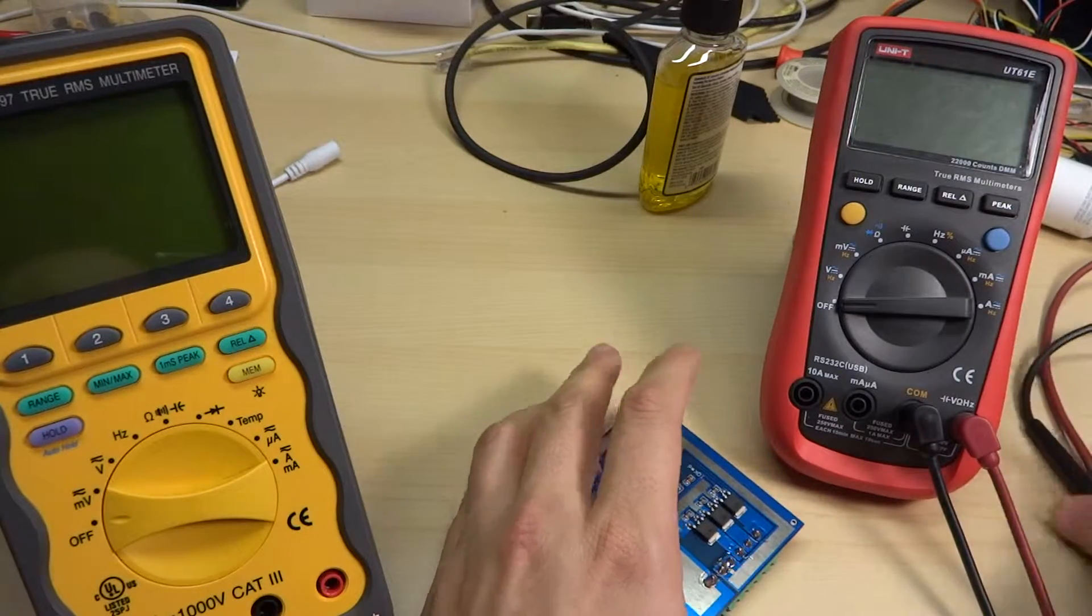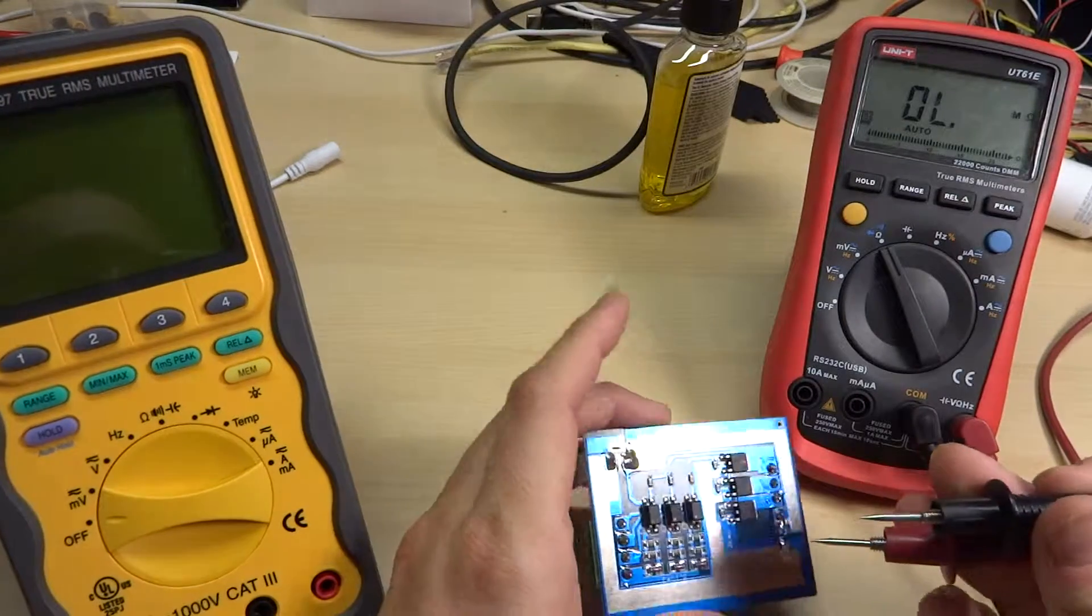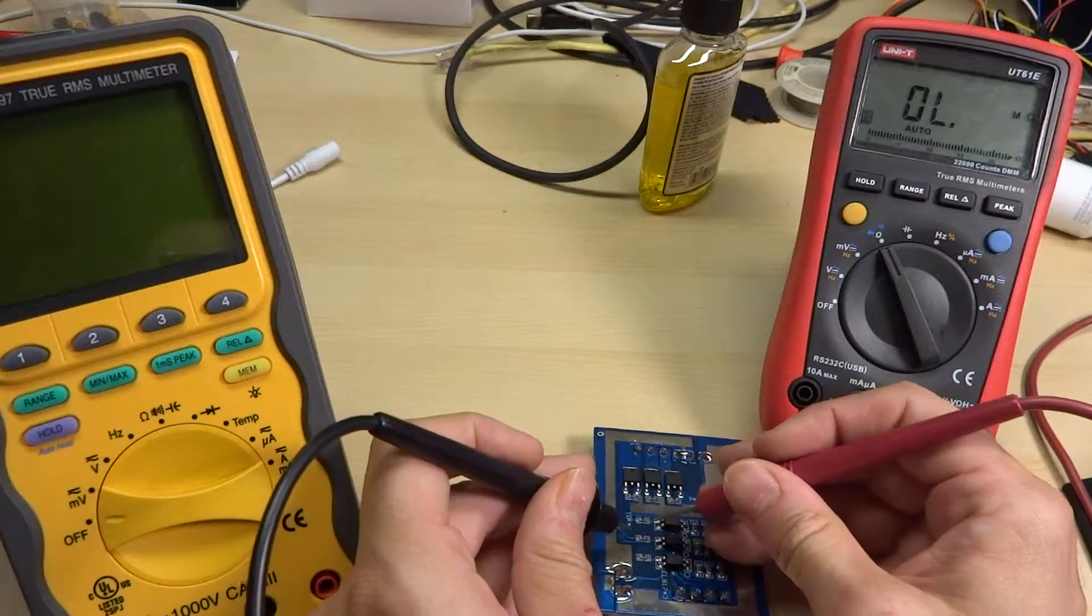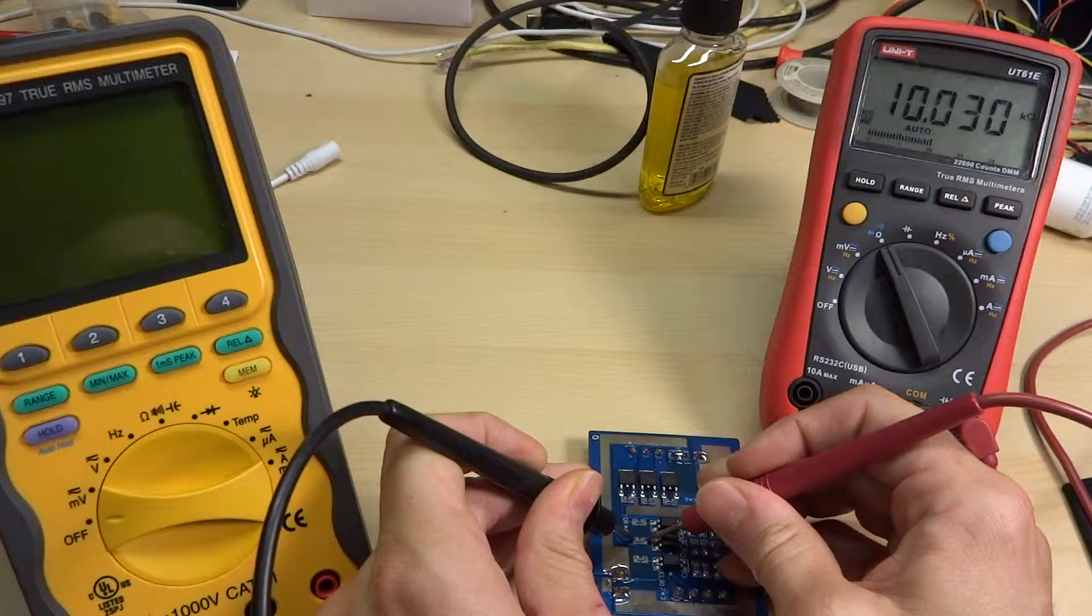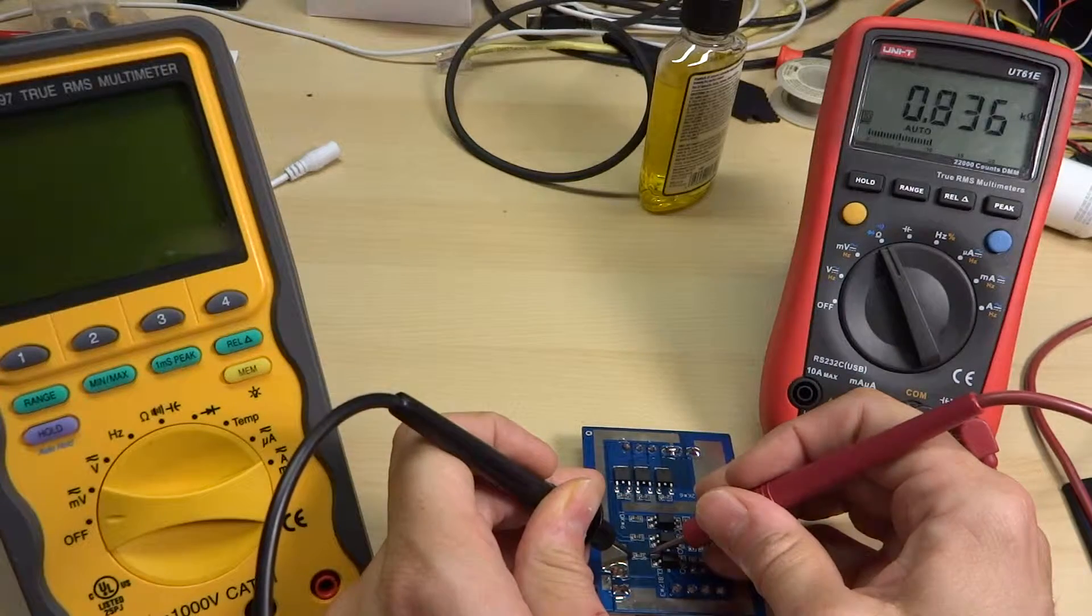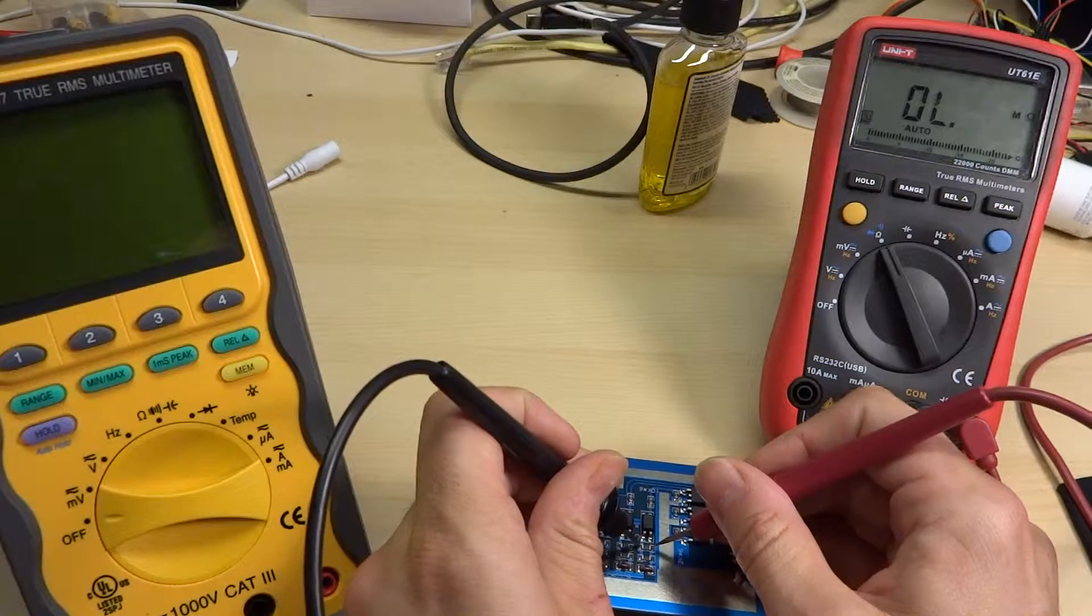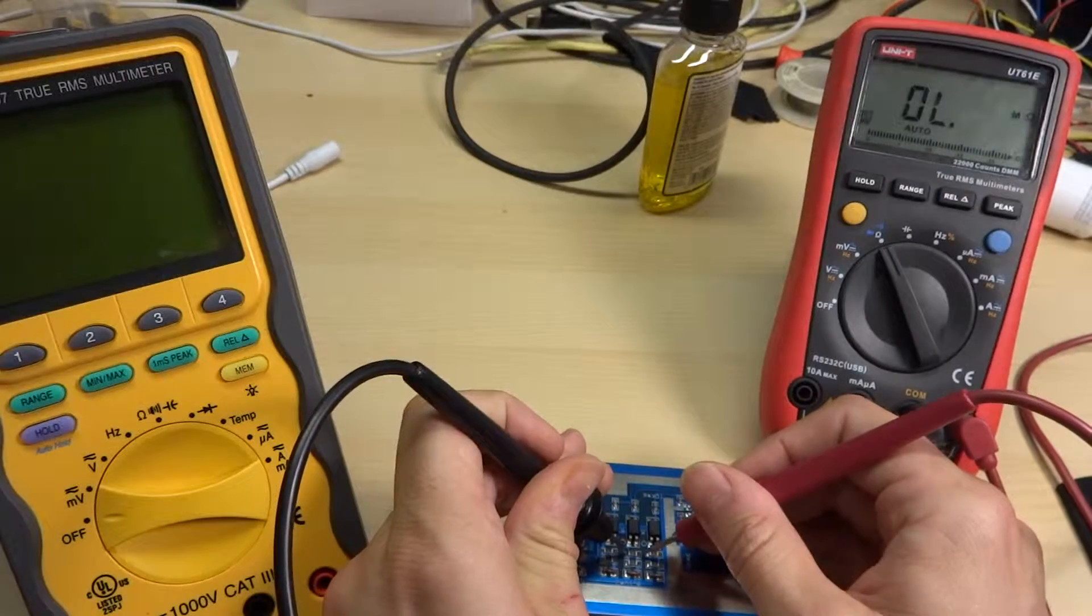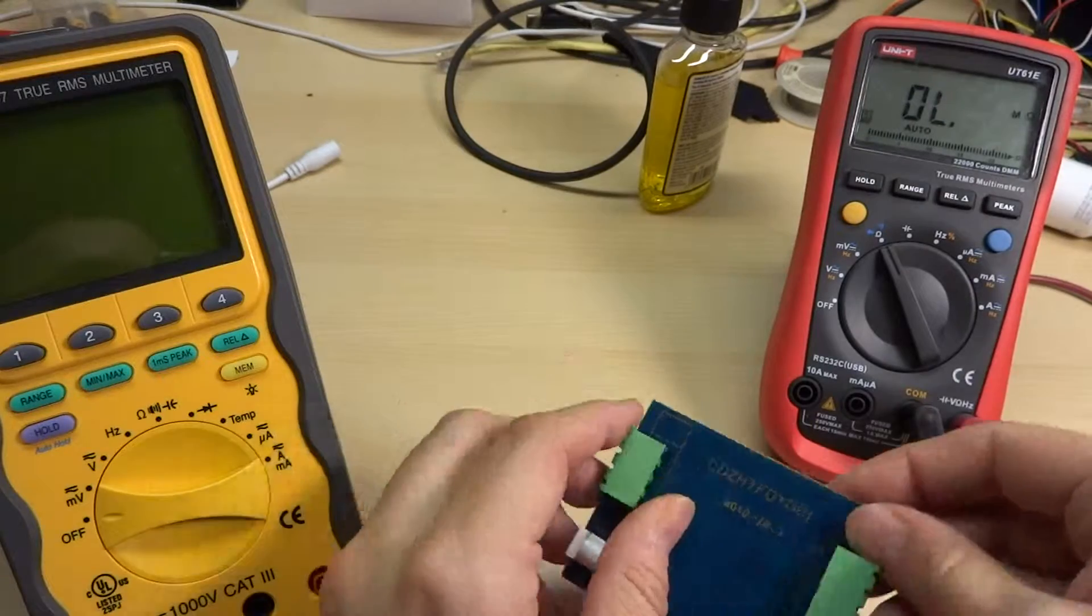It's a 50,000 count, pretty decent. I don't know how cheap you can buy these for, but if you go to their website it's 300 bucks or something like that. Being 50,000 count has a lot of digits and I think it's pretty accurate, has a min max relative, one millisecond peak, has some interesting modes and a memory mode. It has decent capabilities actually. So anyhow, so check out. Well here and then here's a Unity UT 61e.